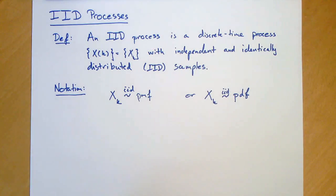IID processes are one of the simplest class of stochastic processes. Nevertheless, IID processes are important examples of stochastic processes and we use them frequently. In particular, we use them as building blocks for constructing more interesting processes.